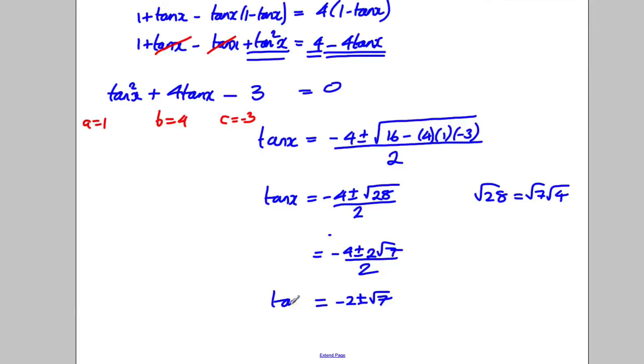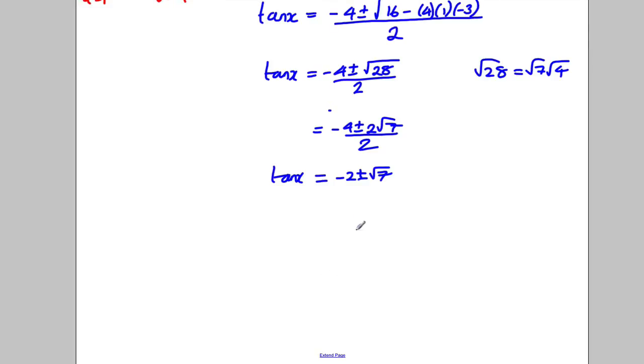So there's my tan X, it could be those two things there. Then I go ahead and work out all the answers. So tan X on the one hand is negative 2 plus root 7, and tan X on the other hand is negative 2 subtract root 7. Therefore X is the inverse tan of these values.